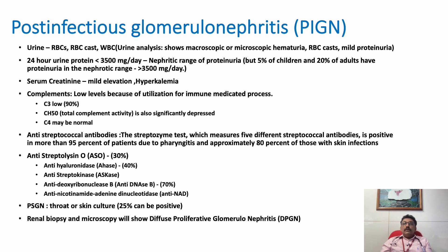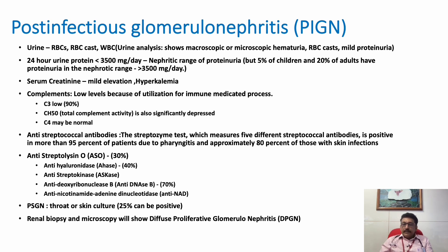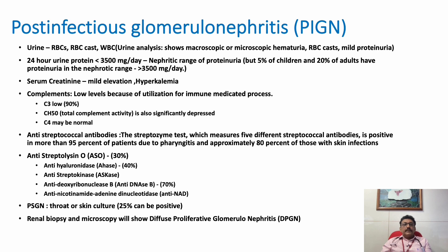These antibodies indicate whether the patient has streptococcal infection, but they do not confirm glomerulonephritis. The major features of glomerulonephritis are RBCs in the urine, hypertension, and low complement levels.